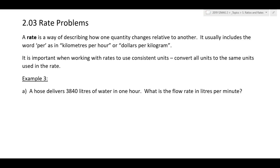I've got a hose, 3,840 litres of water in one hour. What is the flow rate in litres per minute? I've got the litres, I don't have minutes. So, I've got 3,840 litres per one hour, which is 3,840 litres per 60 minutes.